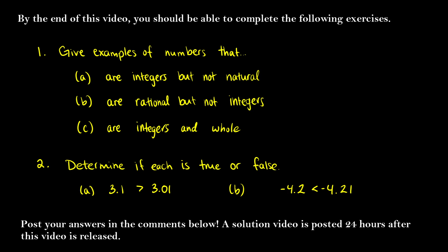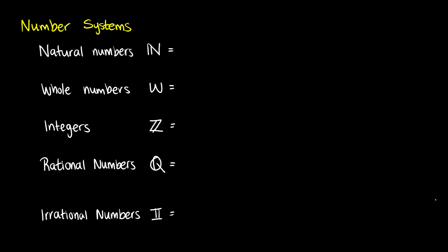We're starting off with all the different number systems. You're familiar with numbers like 3, 7, 0, negative 16, e, 5, and possibly more. Numbers are categorized into different groups or sets of numbers.